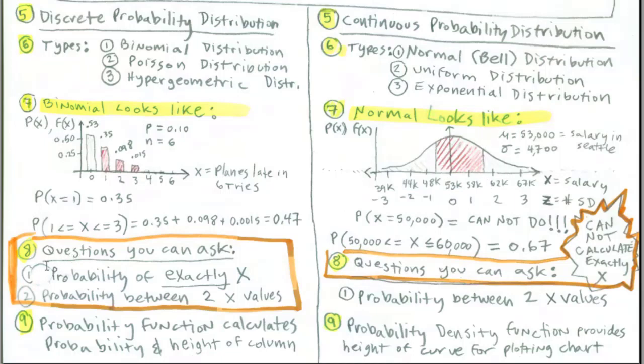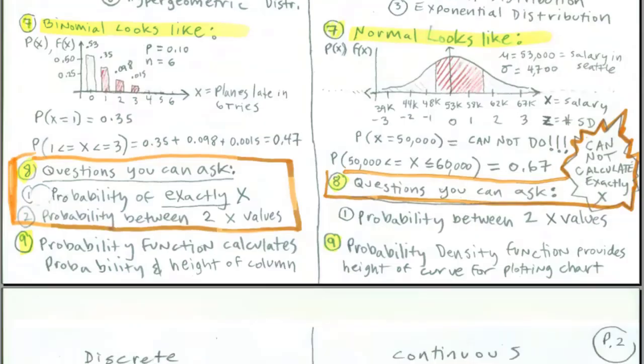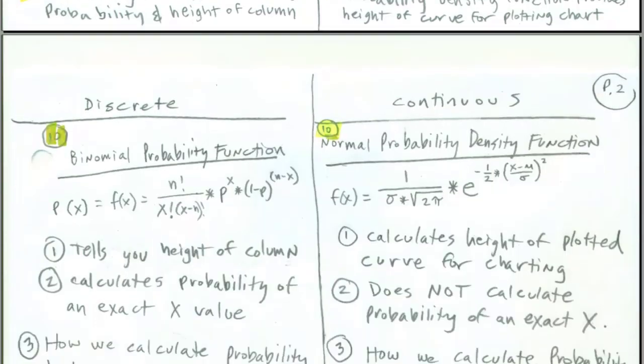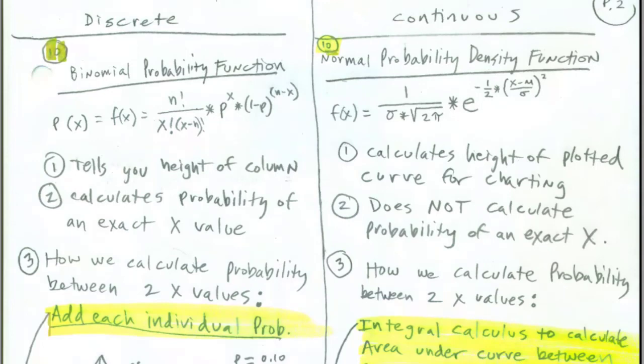So guess what? Questions last chapter: we could actually ask the probability of exactly an x or probability between two x values. Here, questions you can ask. There it is, just one. Probability between two x values. Now, let's scroll to our next page and talk a little bit more about why that's true.